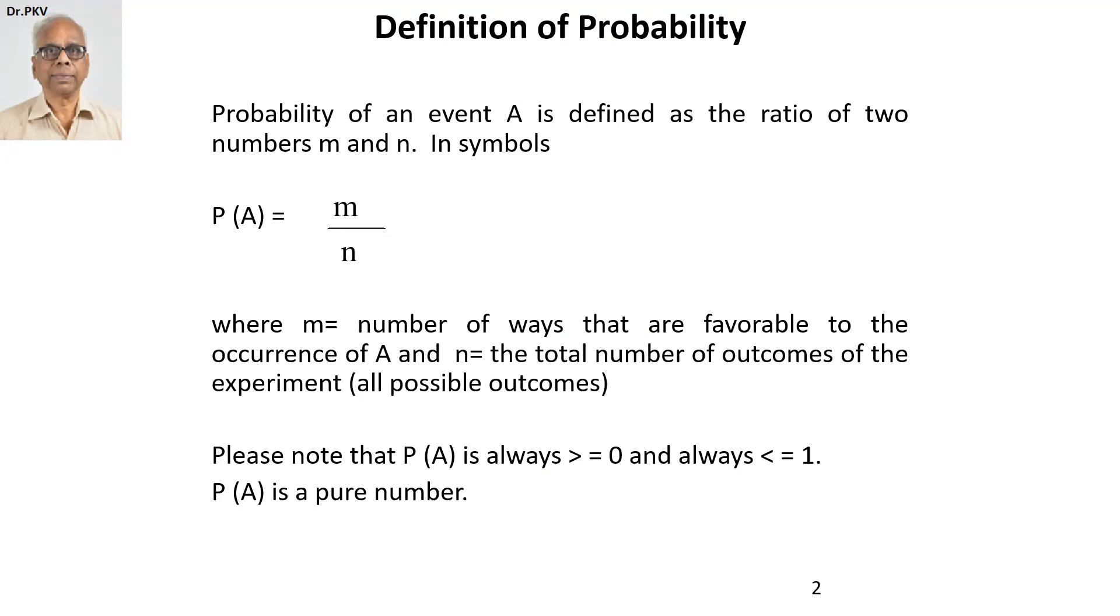where m is equal to the number of ways that are favorable to the occurrence of A and n is equal to the total number of outcomes of the experiment or all possible outcomes. n represents all possible outcomes out of which m cases are favorable to the occurrence of A.